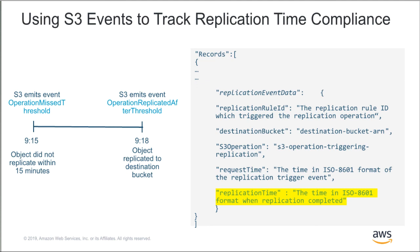Let's take a look at the event format here. Notice the added replication time element highlighted — that element will tell you the time in ISO format when replication completed. You can then use these records to build a regular compliance report that documents any deviation from the 15-minute replication threshold and provide that to your auditors. With that, we'll be happy to take your questions.